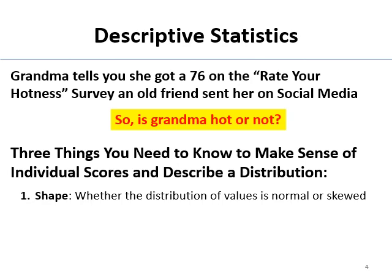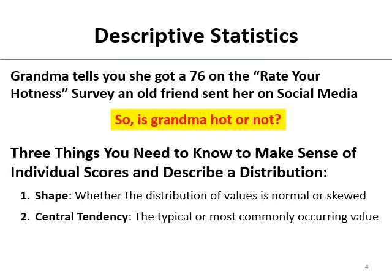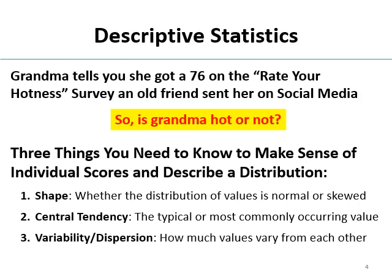One is the shape — you need to know whether the distribution is normal or skewed. Two, you need to know central tendency — what is the most typical score in a distribution, the most commonly occurring value; that's where they tend to cluster. And finally, how spread out are they? That's variability and dispersion — does everyone get the same score, or are they really widely spread out? So: shape, central tendency, and variability.